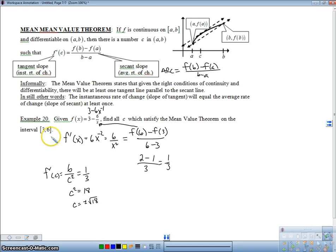Well, which one works? Well, which one of these plus or minus is in this interval? Just the plus. So, by the mean value theorem, C is equal to square root of 18.